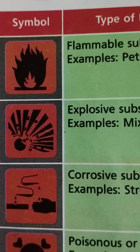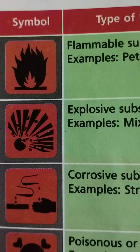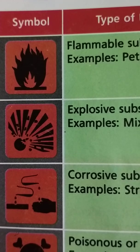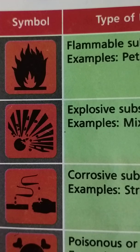The first symbol is used to label the flammable substance. Flammable substances are all those substances which can easily catch fire. For example, petrol, alcohol, ether, kerosene oil, and spirit — they all are flammable substances. We must keep flammable substances away from fire or heat.